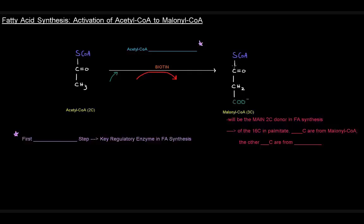Malonyl-CoA is the activated form of acetyl-CoA, and it's the molecule that actually undergoes the reactions of fatty acid synthesis. We start off with this 2-carbon acetyl-CoA, and we attach this carboxyl group at the bottom, and that carboxyl group comes from a bicarbonate. Because this is a carboxylation reaction, it requires biotin.